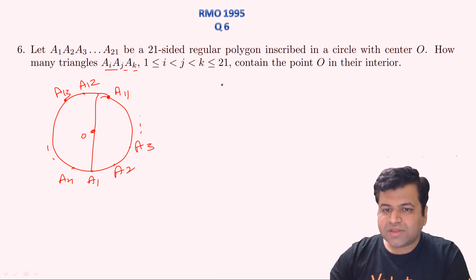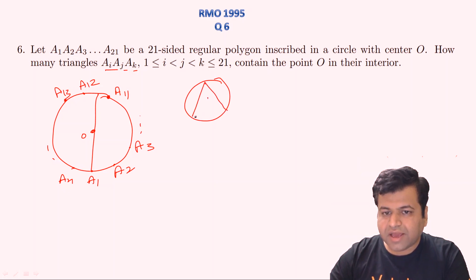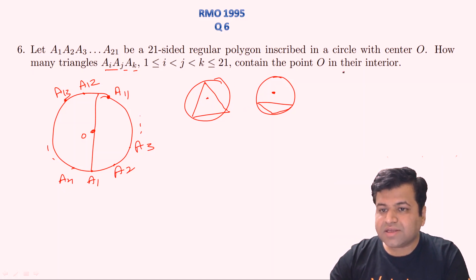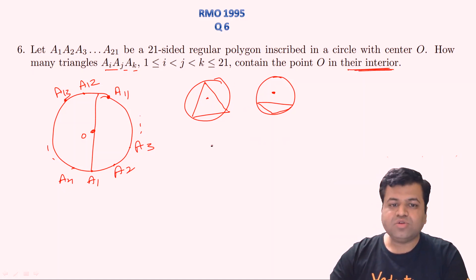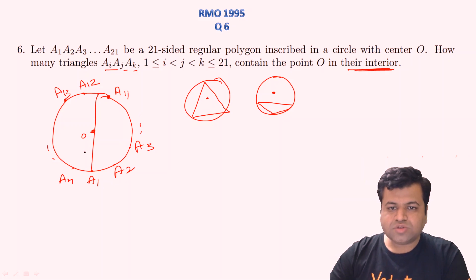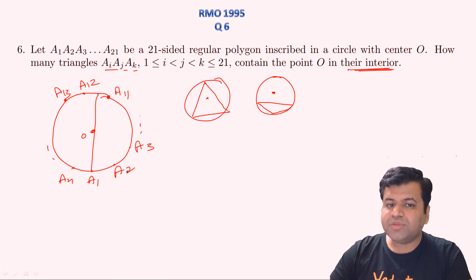The question asks: how many triangles AiAjAk, whose vertices lie on this polygon, contain the point O as an interior point? Remember that the circumcenter of an acute-angled triangle always lies inside the circle, and the circumcenter of an obtuse-angled triangle always lies outside. So we need to find how many acute-angled triangles are possible whose vertices lie on the vertices of this regular polygon.